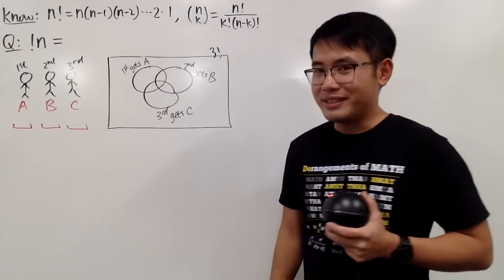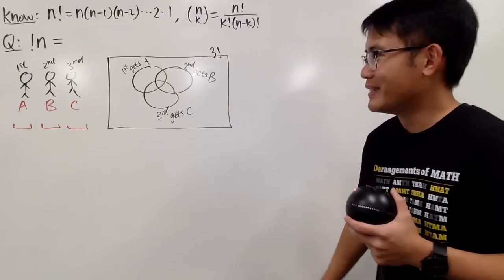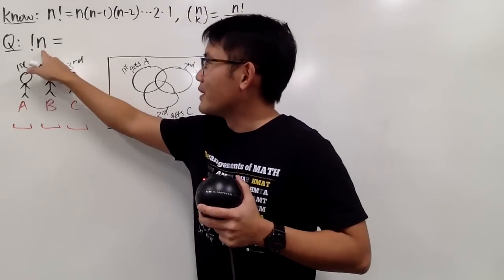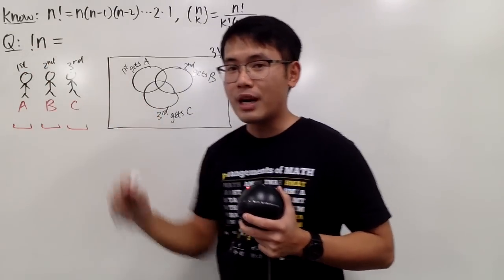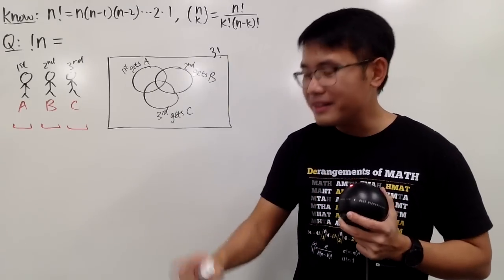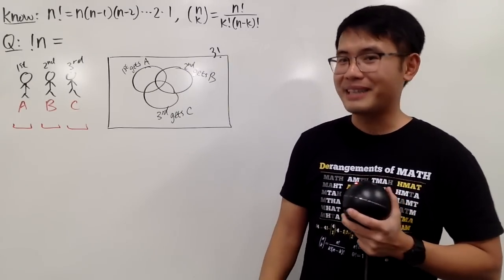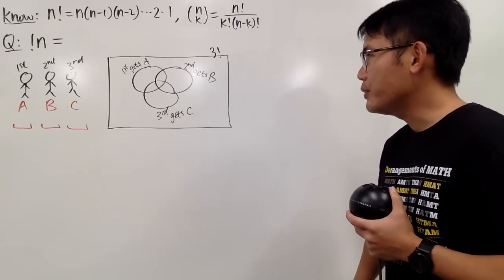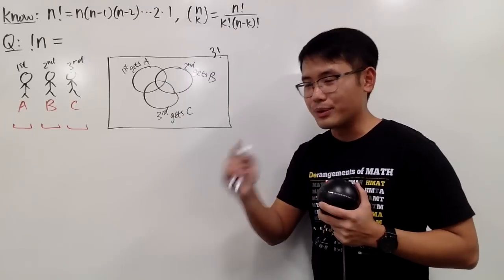If you don't mind getting your gift back, there will be a total of three factorial ways to arrange gifts A, B, C. But of course, where's the fun if you just get your own gift back? When you have the subfactorial — the derangement — this will compute the number of ways for you guys to do a gift exchange so that nobody gets back his or her own gift. And now, to compute that, we are going to look at this diagram.